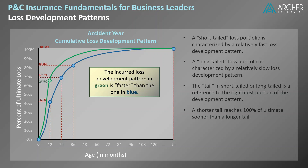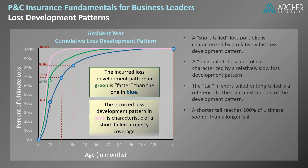Let's add one more incurred loss development pattern to our graph. This pattern, represented in pink, is characteristic of a short-tailed property coverage. Property coverages are generally short-tailed because claims are reported and settled more quickly on average. We can see that in this pattern, the expected ratio of incurred loss to ultimate loss is at 100% by around 36 months. For what it's worth, the green and blue lines represent loss development patterns for two different workers' compensation portfolios — the blue line represents incurred loss development for California exposures and the green one for Missouri exposures. In general, workers' compensation is considered to be a long-tailed line.